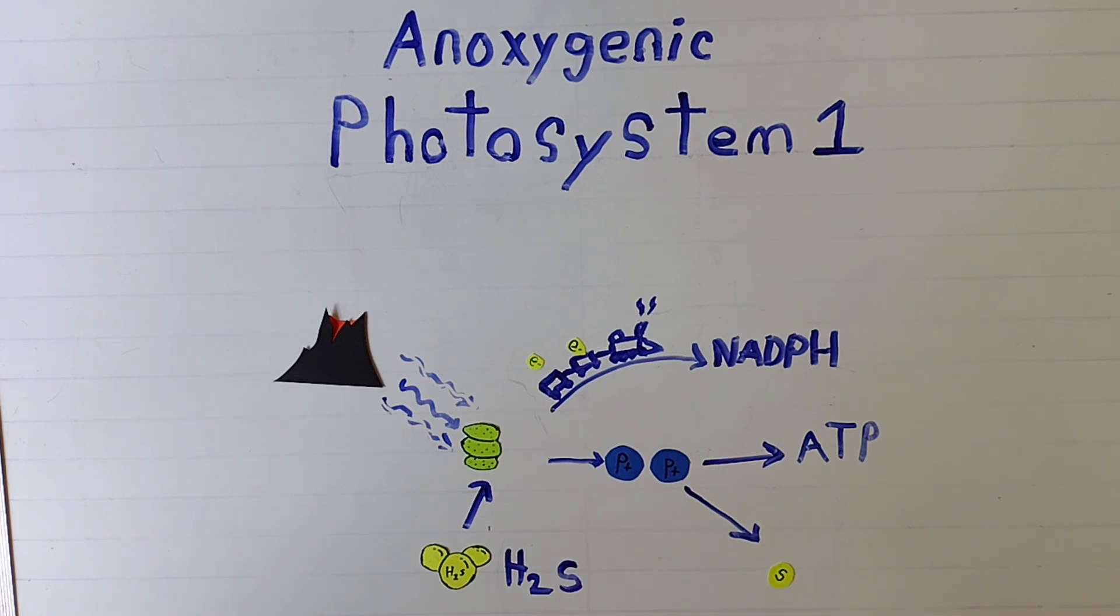So the products of anoxygenic photosynthesis are NADPH, ATP, and elemental sulfur.